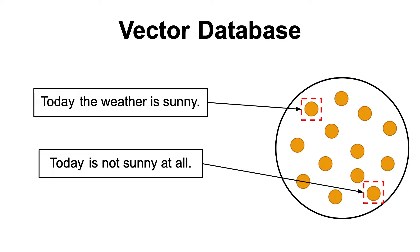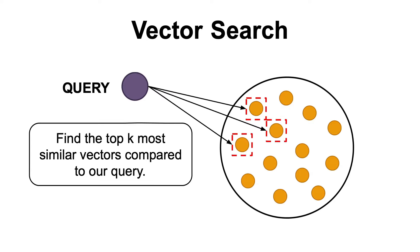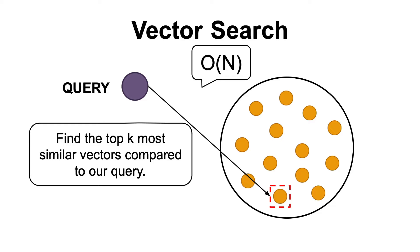And finally, if we have sentences which present opposing facts, their corresponding vectors should be even further apart. Now, when it comes to vector search, the goal of this task is to find the top k most similar vectors to a given query vector. The naive approach would be to simply compute the similarity between the query vector and every single vector in the database, which is known as the brute force method.